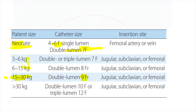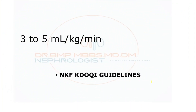For less than 15 kg, ideally an 8 French catheter is suitable. For more than 13 kg, a 10 French catheter or even a normal adult catheter can be used. In the age group of 10 to 18 years, ideally based on availability, 8 French is more commonly available than 9 French. If 9 French is available, it can be used as per the weight cutoff; otherwise, 8 French can be ideal.